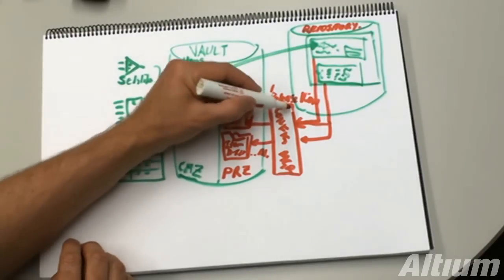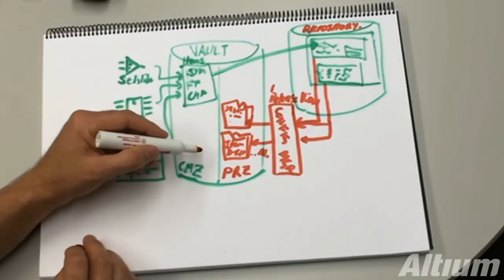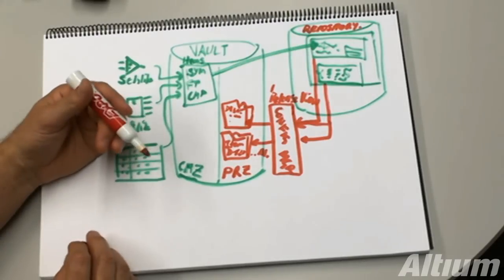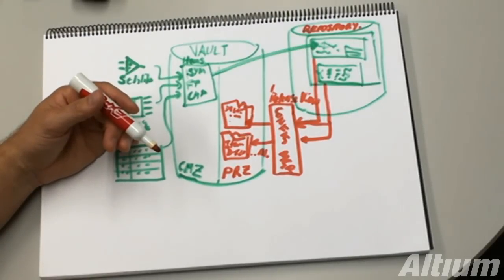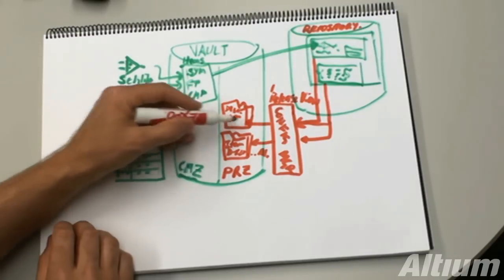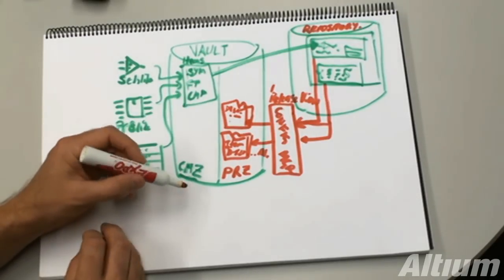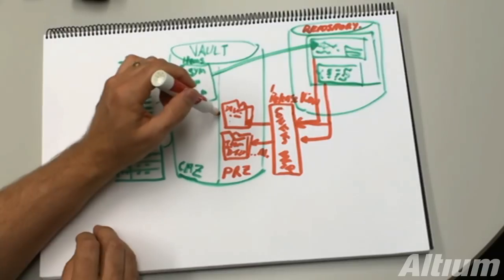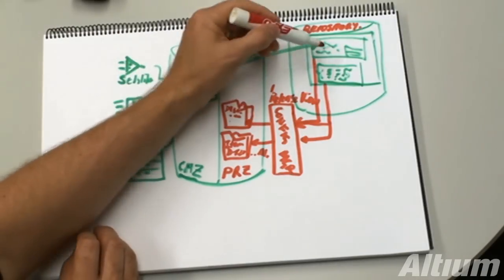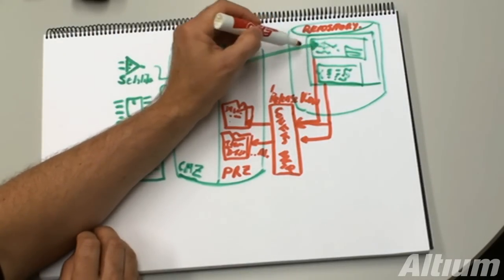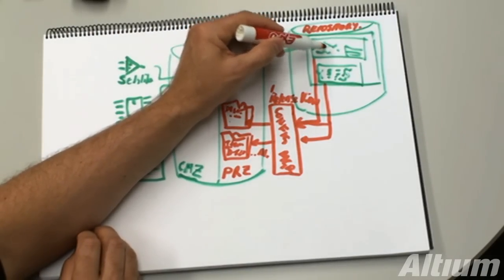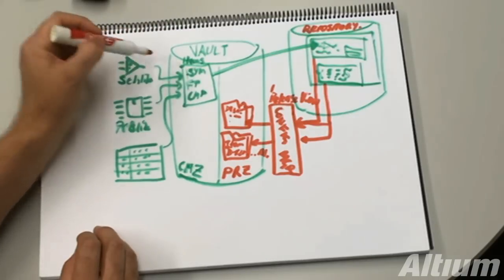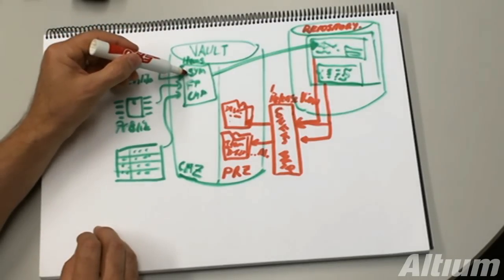And those documents, along with the outputs generated, for example, the Gerbers, ODB++, bills of materials, etc., are released into those items. Once those are released, a link is established because the component symbols in, or the components you place in the schematics in this design, retain a link back to their original item in the vault.